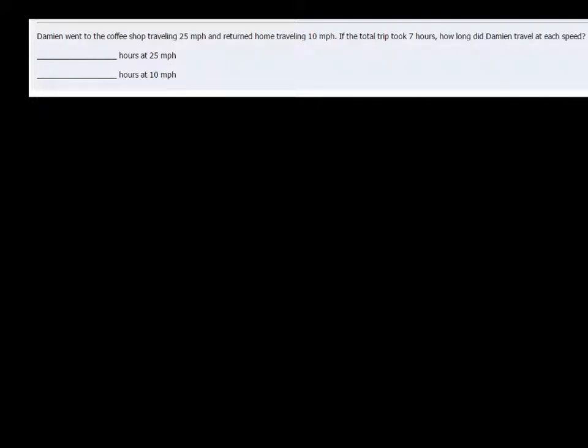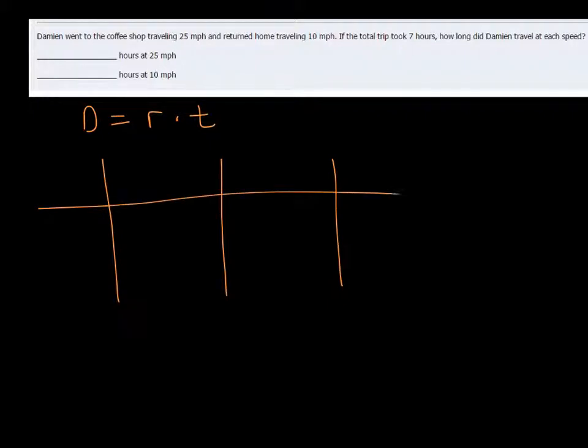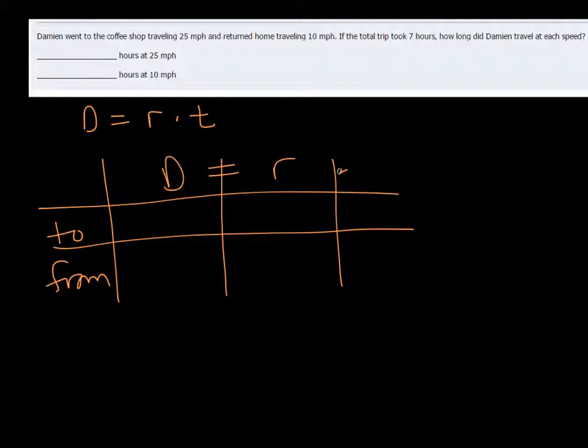So we have to know a little bit about distance and rate. Distance is equal to rate times time. I like to set up a little table with these to help me organize everything. So he went to the coffee shop and then he went home. So to and from, distance is equal to rate times time.